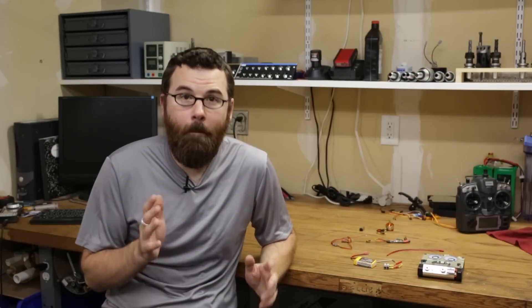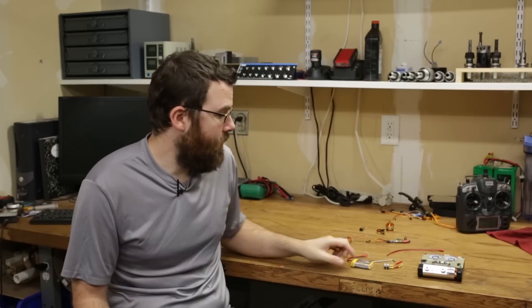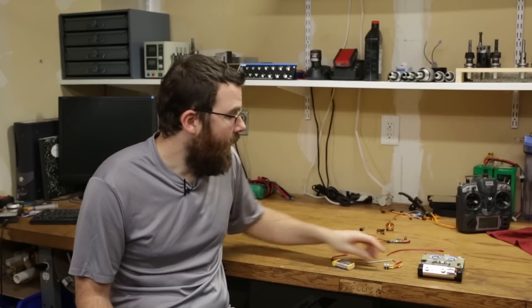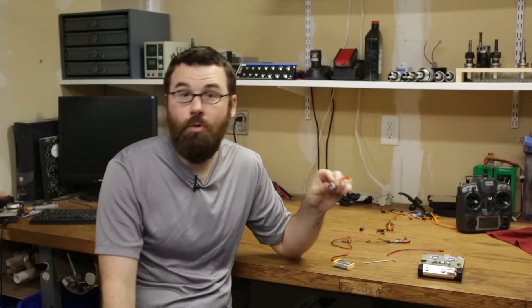Now that we have all the RC control stuff out of the way, it's time to talk about power. For the power system, we're going to talk about two main components. I'm going to talk about the battery, and then I'm going to talk about the power switch, and that's how power gets to everything.